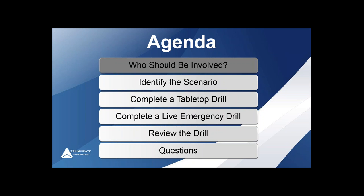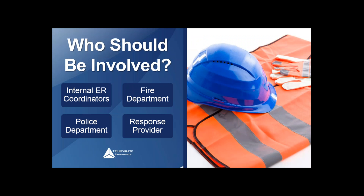The first part is who should be involved. This starts with looking at your emergency action plan or contingency plan to see who you've identified — the fire department, police department, local hospital, or an emergency response provider. Along with those outside vendors, you also want to identify your internal ER coordinators. This can sometimes be one person. If you're a smaller facility running EH&S, facilities, and acting as the ER coordinator, you want to make sure you at least have one backup, and that backup should be in these mock drills.